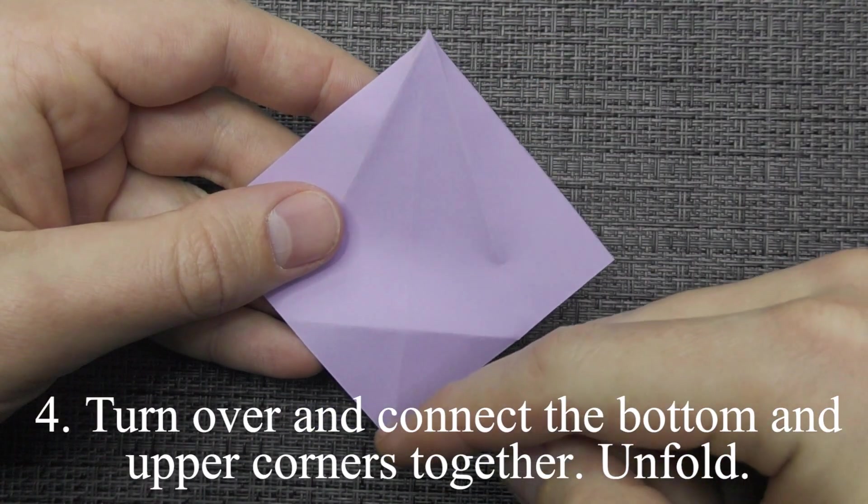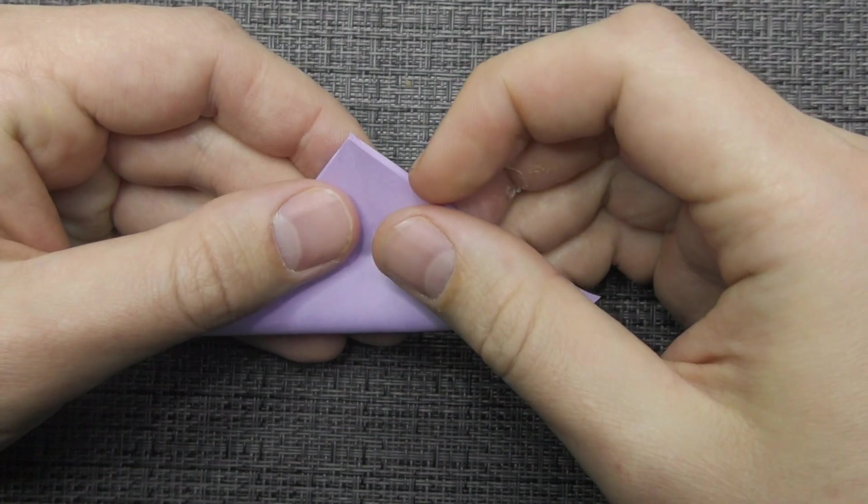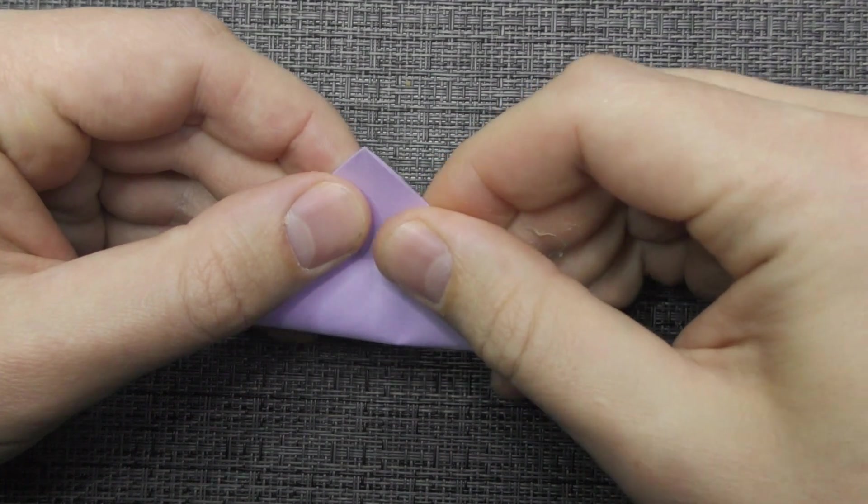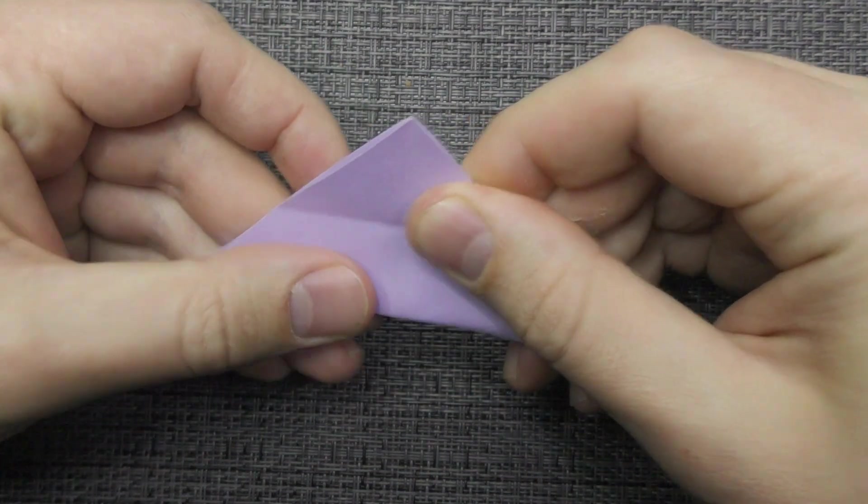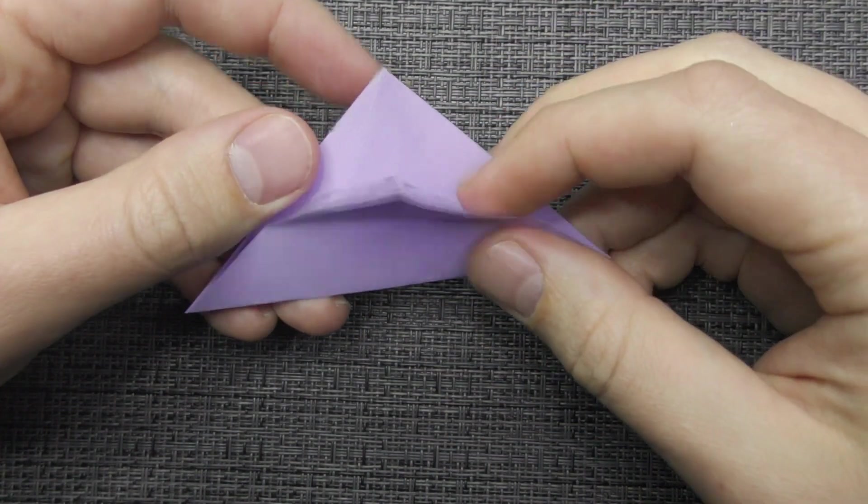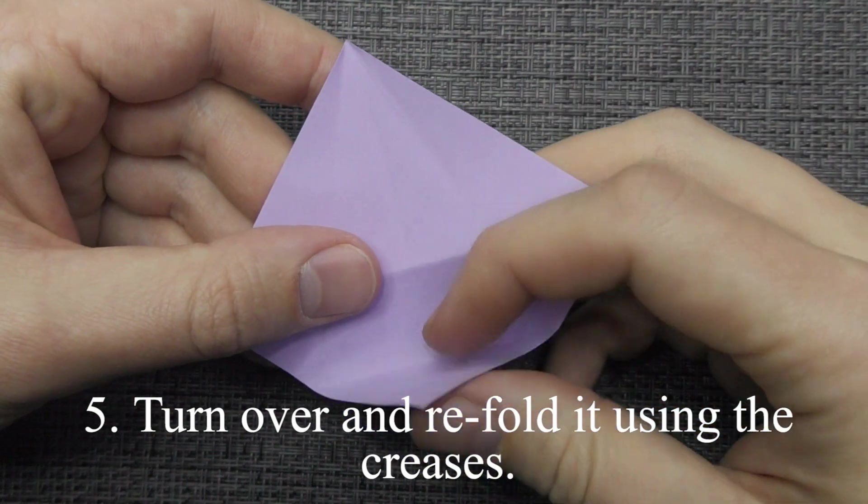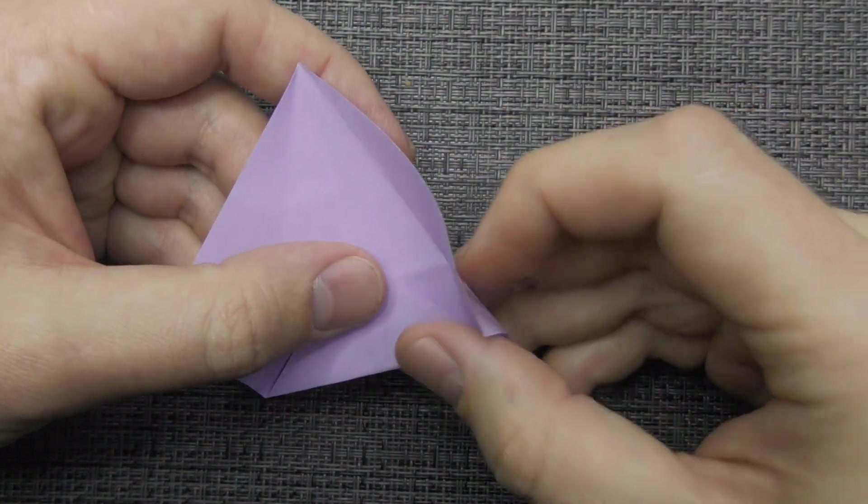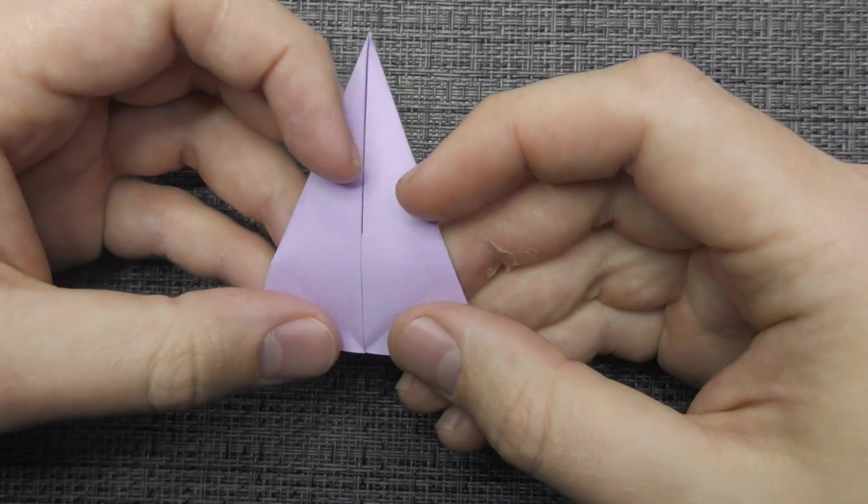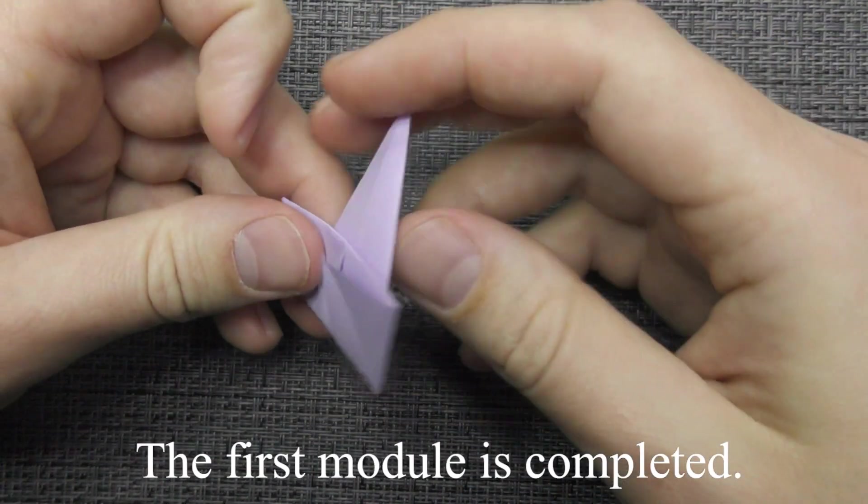Turn over and connect the bottom and upper corners together. Unfold. Turn over and refold it using the creases. The first module is completed.